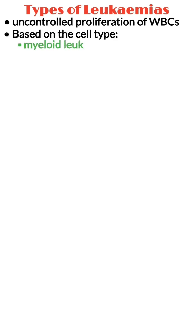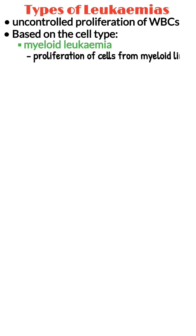Leukemias can occur when there is uncontrolled proliferation of immature white blood cells. Based on the cell type, leukemias can be classified as myeloid leukemia, which are caused by the proliferation of cells from the myeloid line, such as eosinophils, basophils, and neutrophils.